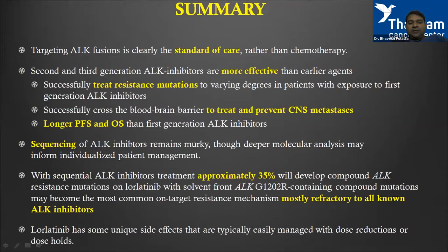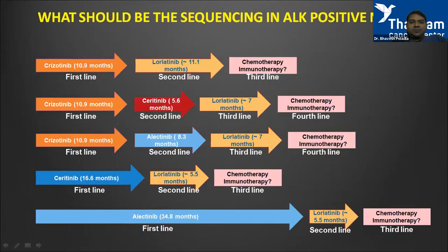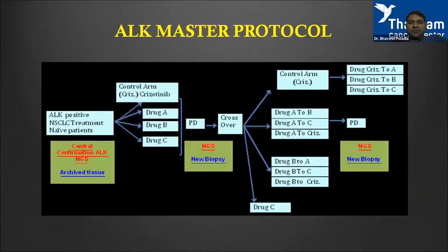Lorlatinib has a unique but manageable side effect profile. My personal sequencing choice is alectinib first, followed by lorlatinib and chemo-immunotherapy, where we can aim for an overall survival of four to five years. The answer to optimal sequencing will likely come from the ALK Master Protocol — a well-designed study with crizotinib as the standard arm, then second-generation TKIs A, B, and C (alectinib, brigatinib, ceritinib), with NGS and deep sequencing for ALK-resistant mutations performed at each progression.